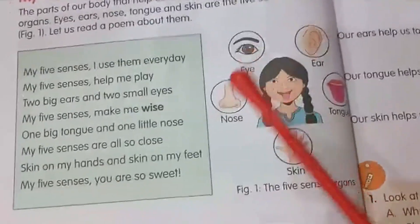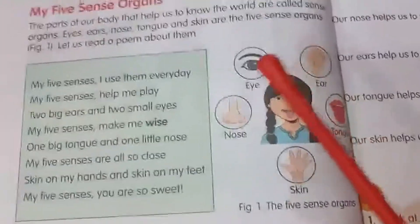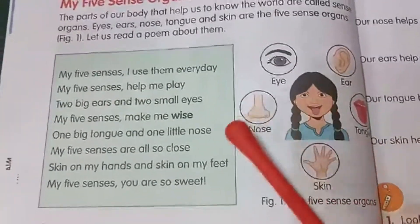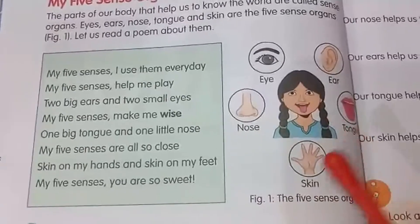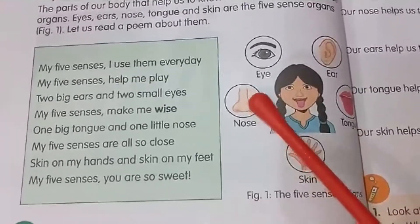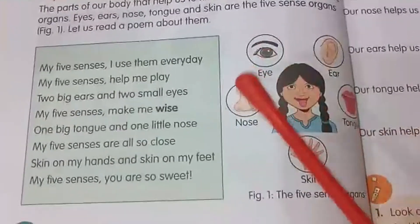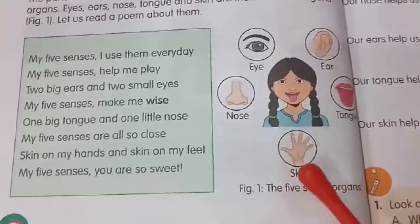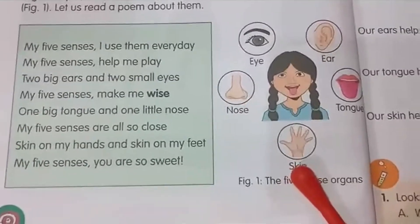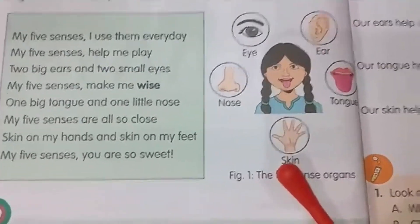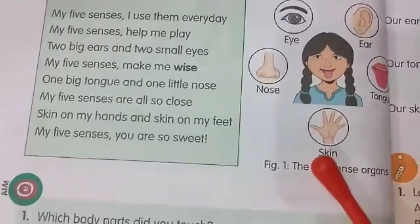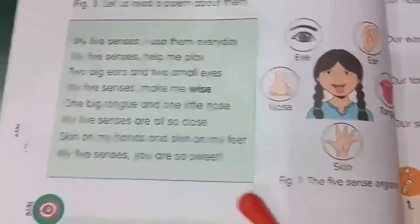These are our five sense organs: eyes, ears, nose, tongue, and skin. All these parts are on our face. Skin as a sense organ is found all over our body.